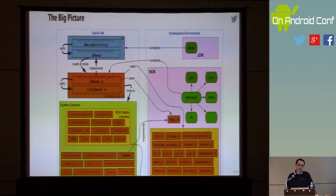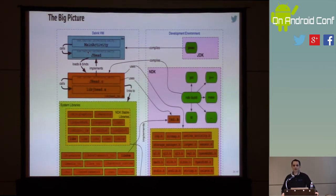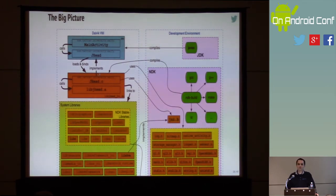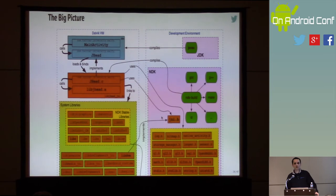On the Java side I'll have a single activity called MainActivity that will utilize a class called JHead, which will eventually use the native library. Just to give a disclaimer: I did not go through the trouble of doing this in a proper threading manner — all of this is being done on the main thread and there are all sorts of issues with that because it involves I/O. But it's only reading, so it's not as bad, and this is for demonstration purposes only.